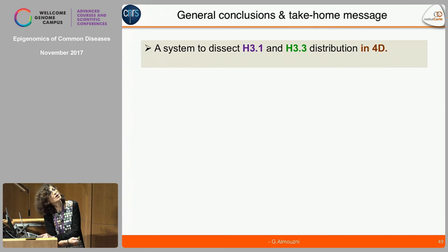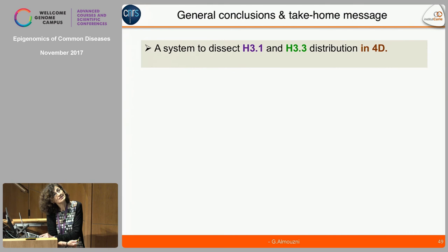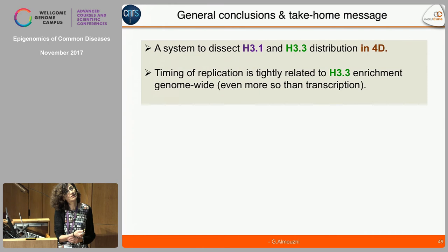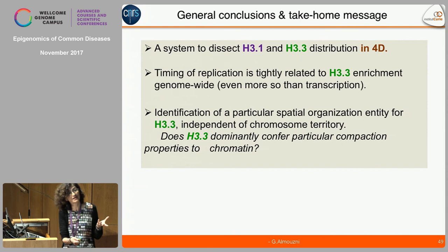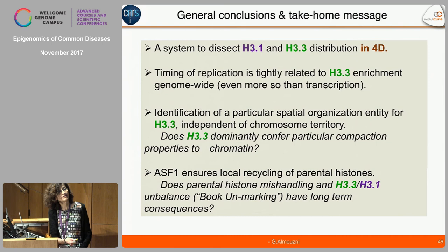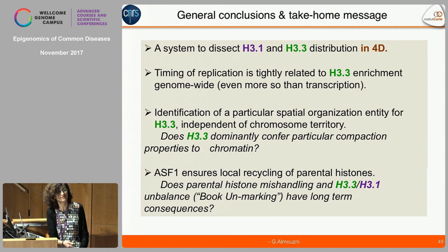To conclude: retention and local recycling of parental H3.1 and H3.3 require ASF1. HU treatment impairs local recycling of histones — important to bear in mind since components that create replication stress would have to be considered. ASF1 knockdown impairs local recycling with a spatial redistribution affecting both H3.1 and H3.3 in late S phase, but only H3.1 in early S. The question is how this leads to an H3.3/H3.1 imbalance, and this may reveal a safeguard mechanism in early S phase where H3.3 can be recycled at replication sites. Whether parental histone mishandling and H3.3/H3.1 imbalance can function as a bookmarking with long-term consequences is an open question.